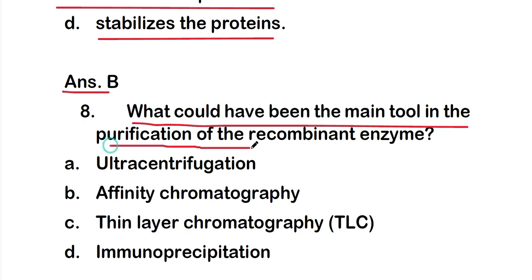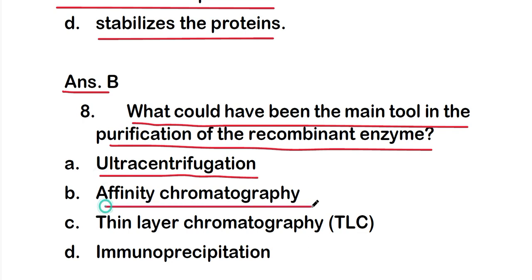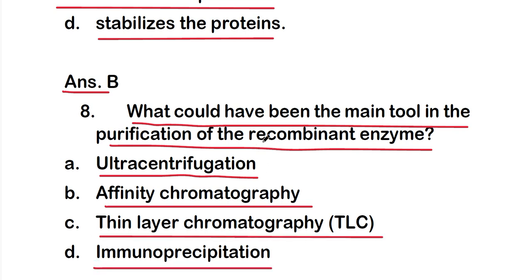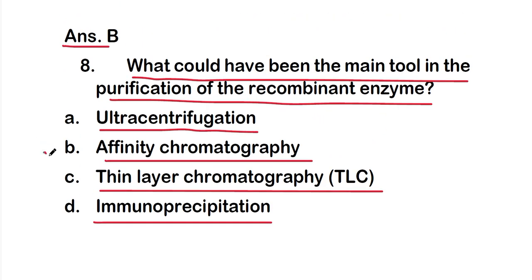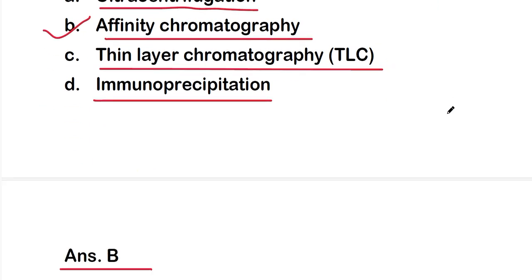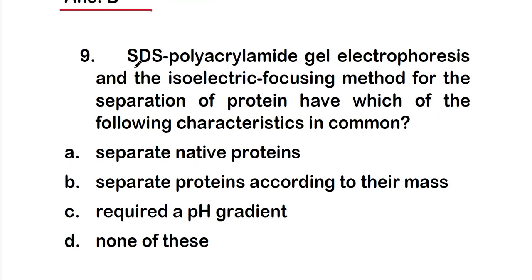Question 8: What is the main tool in the purification of a recombinant enzyme? Options: A) ultracentrifugation; B) affinity chromatography; C) thin layer chromatography (TLC); D) immunoprecipitation. The right answer is option B — affinity chromatography is the main tool used in the purification of a recombinant enzyme.